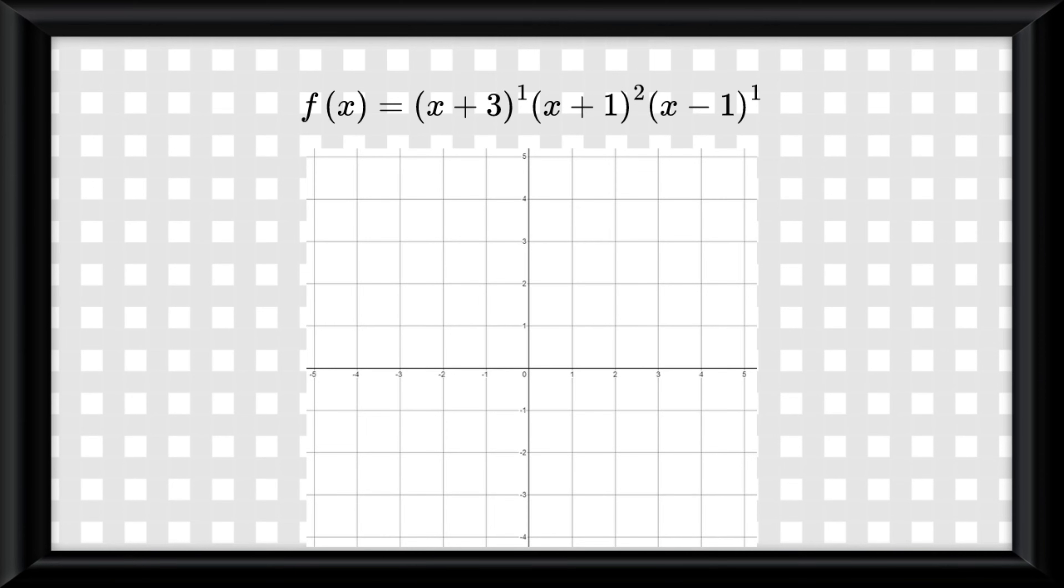Moving on to graphs. Say you have an equation in intercept form. Here's another trick. Calculating the zeros is easy. Simply set each parenthesis equal to zero, and solve each one. But then if you graph the zeros on the graph, how do you know how the line moves? Here's the trick I was talking about.